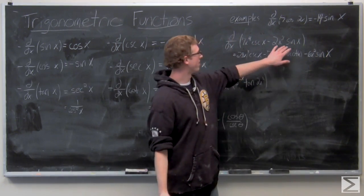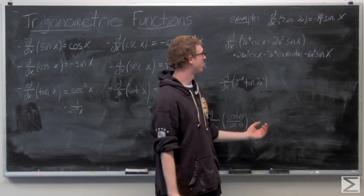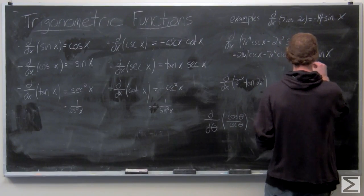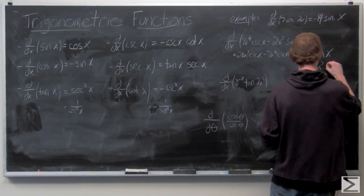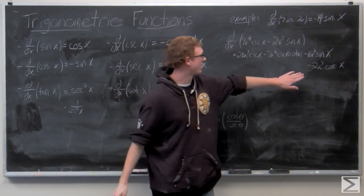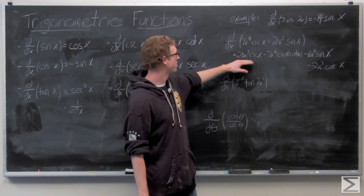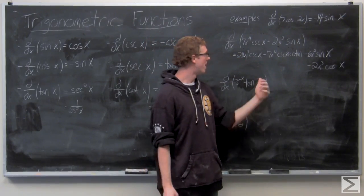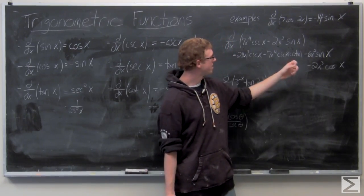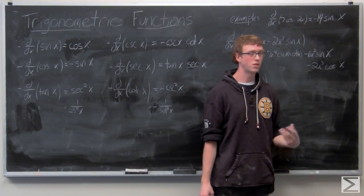The derivative of sine X times negative 2X cubed gives us negative 2X cubed cosine of X. Putting it all together, the derivative is 28X cubed cosecant of X minus 7X to the fourth cosecant cotangent minus 6X squared sine of X minus 2X cubed cosine of X.